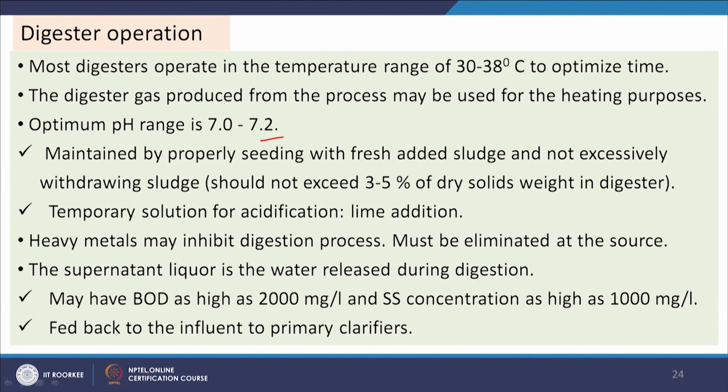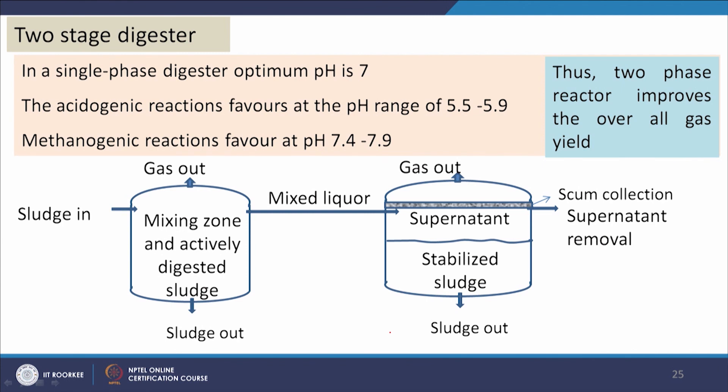When sludge undergoes anaerobic digestion, the supernatant liquid requires further treatment. The solid product is useful and biogas is also obtained. The water can be fed back to the influent at the primary clarifiers, re-entering the effluent treatment plant. In a single-step reactor there are disadvantages because acetogenic reactions favor lower pH (5.5–5.9) while methanogenic reactions require higher pH (7.4–7.9).